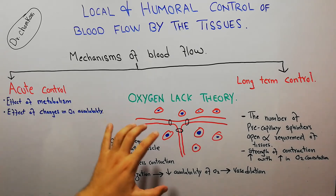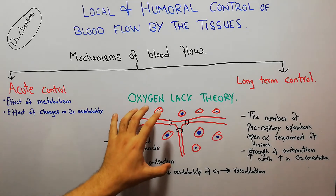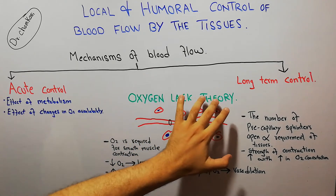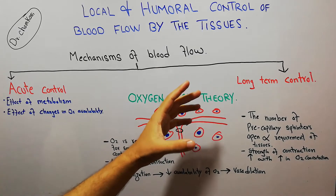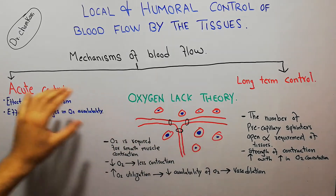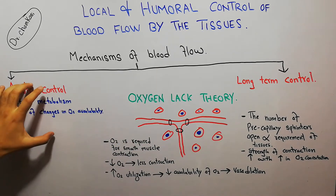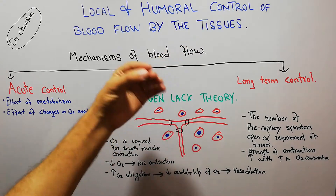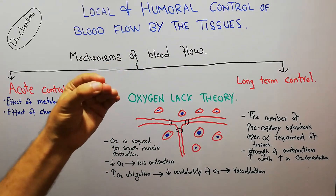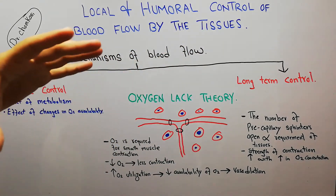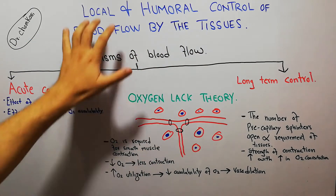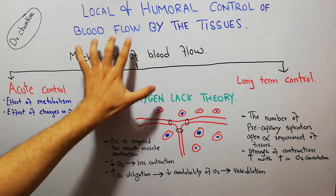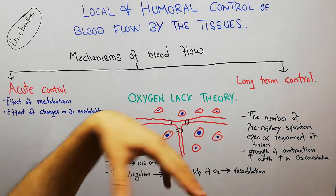In this lecture we are going to discuss the oxygen lack theory, or the nutrients lack theory, for the acute control of blood flow. This is part of our series of lectures about the local and humoral control of blood flow by the tissues.